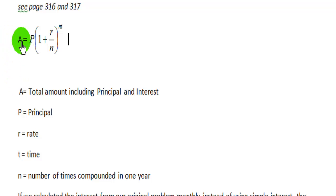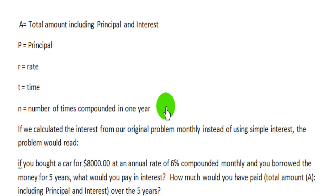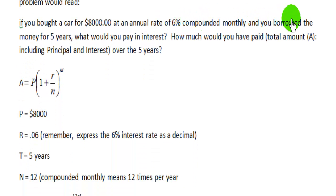If we read it from left to right, the total amount that you will pay equals the principal times the quantity, one plus the rate, divided by the number of times compounding, raised to the power of the number of times compounding times the time in years. Now, if we read the same problem, but instead of having simple interest, we have it compounded monthly. That means twelve times a year. If you bought a car for $8,000 at an annual rate of 6% compounded monthly, and you borrowed the money for five years, what would you pay in interest? How much would you have paid total amount A, including principal and interest over five years?